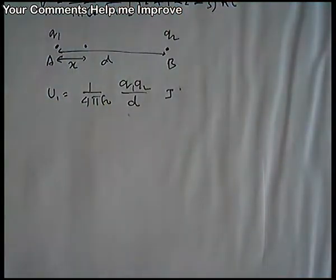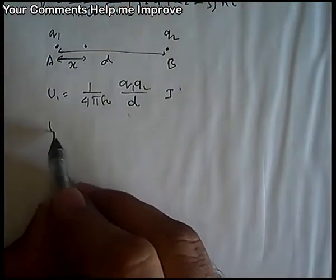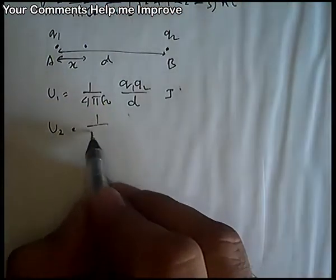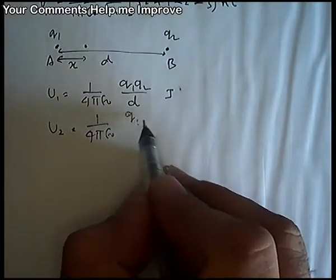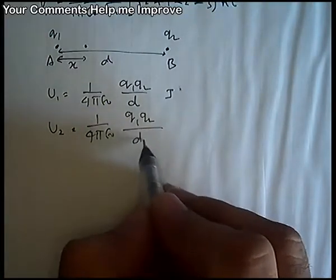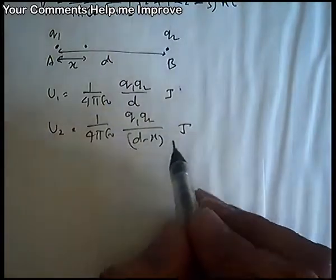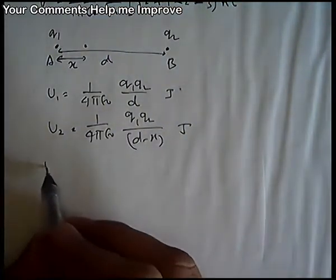The distance has changed to d minus x. So now the potential energy is 1 by 4 pi epsilon naught Q1 and Q2 upon d minus x joule.